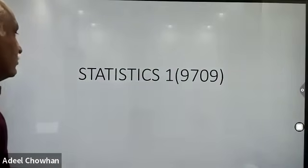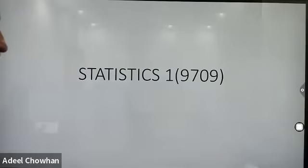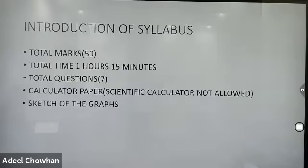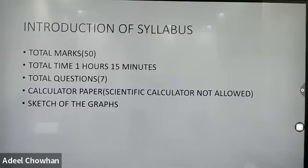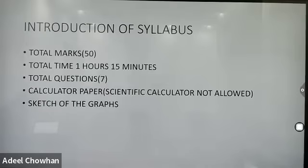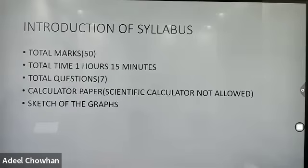We are starting the new syllabus for you. The statistics code is 19709, paper 5. The total marks is 50, total time is 1 hour 15 minutes, total number of questions is seven. Calculators are allowed in this paper, but you cannot use the scientific calculator. You are also going to draw the sketches of the graphs.